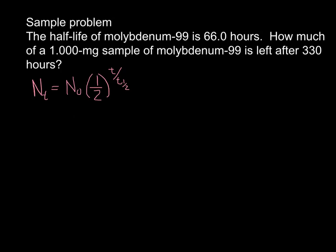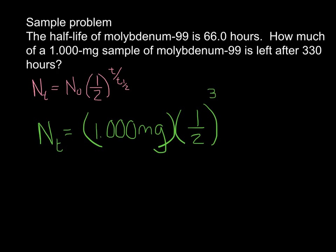So here's a sample problem. We're given the half-life of molybdenum-99, and that's 66 hours. How much of a 1 milligram sample of molybdenum-99 is left after 330 hours? So we want to know N sub t. Our initial amount was 1.000 milligrams. Then we're going to multiply that by a half, raised to the amount of time, which is 330 hours over the 66 hours, which is the value for the half-life. And when you plug this into your calculator, N sub t is equal to 0.03125, and that would be the milligrams.